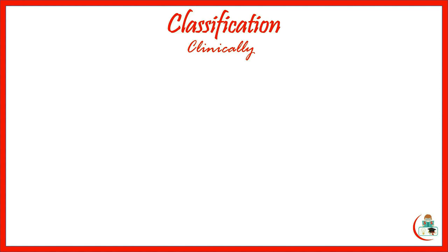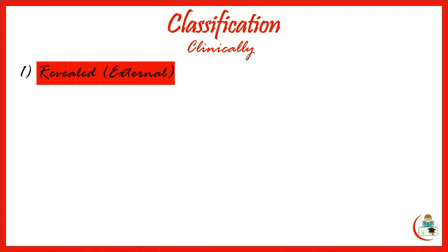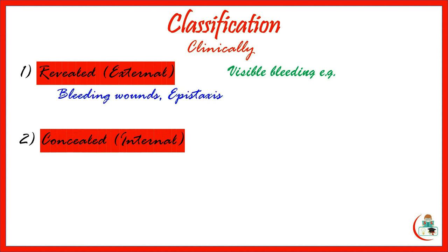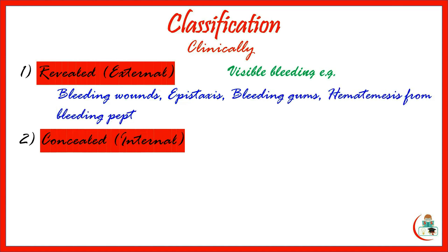Clinically, hemorrhage is classified into revealed or external, and concealed or internal. Revealed hemorrhage is visible, such as bleeding wounds, epistaxis or bleeding from the nose, bleeding gums, hematemesis from a bleeding peptic ulcer, hemoptysis which is bleeding with coughing, etc.